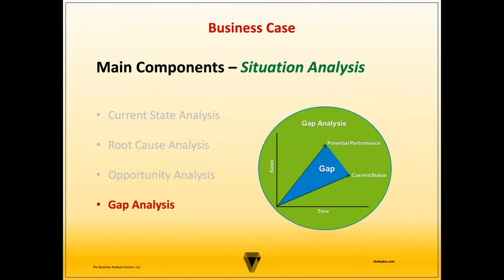This may vary depending on the organization and the scale of the project. Now let's look at the components of a risk analysis. Constraints are influencing factors that cannot be changed and create limitations or restrictions on the product or the solution. In addition to resources, common constraints include time, cost, and scope. Assumptions are influencing factors that are considered to be true but have not been verified.